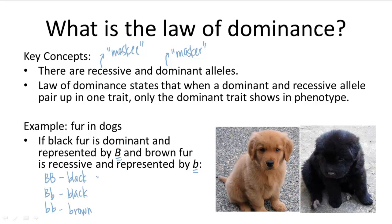Notice how both BB and Bb code for the same phenotype — they both code for black fur. So that means if you were to come across an individual showing the dominant trait, such as a black fur dog, you do not know their genotype, because there are two possibilities. Whereas if you were to come across an individual showing a recessive trait, such as the brown fur dog, you automatically know their genotype, because there is only one possibility. Recessive traits will only show when there are two of them in the genotype. You should also recognize that dominant alleles will always be written in uppercase, whereas recessive alleles are always written in lowercase.